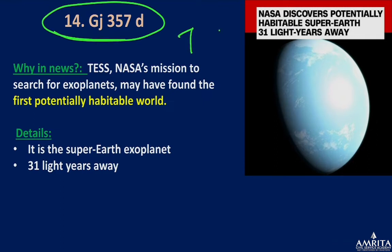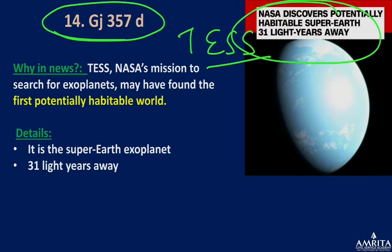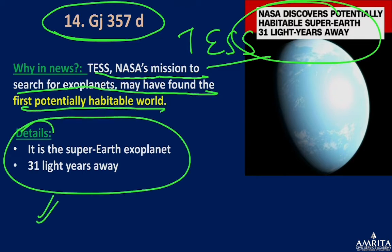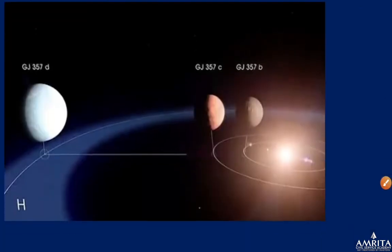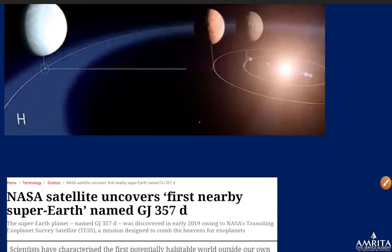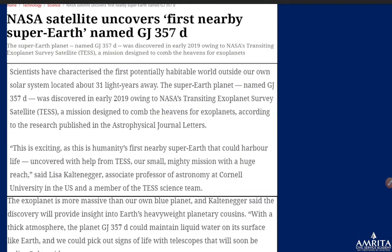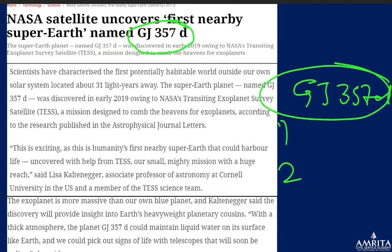TESS itself found the first super-Earth — 31 light years away — and may have found the first potentially habitable world. A nearby super-Earth named GJ 357d is relevant: a question could come asking what GJ 357d is — it is a super-Earth discovered 31 light years away.